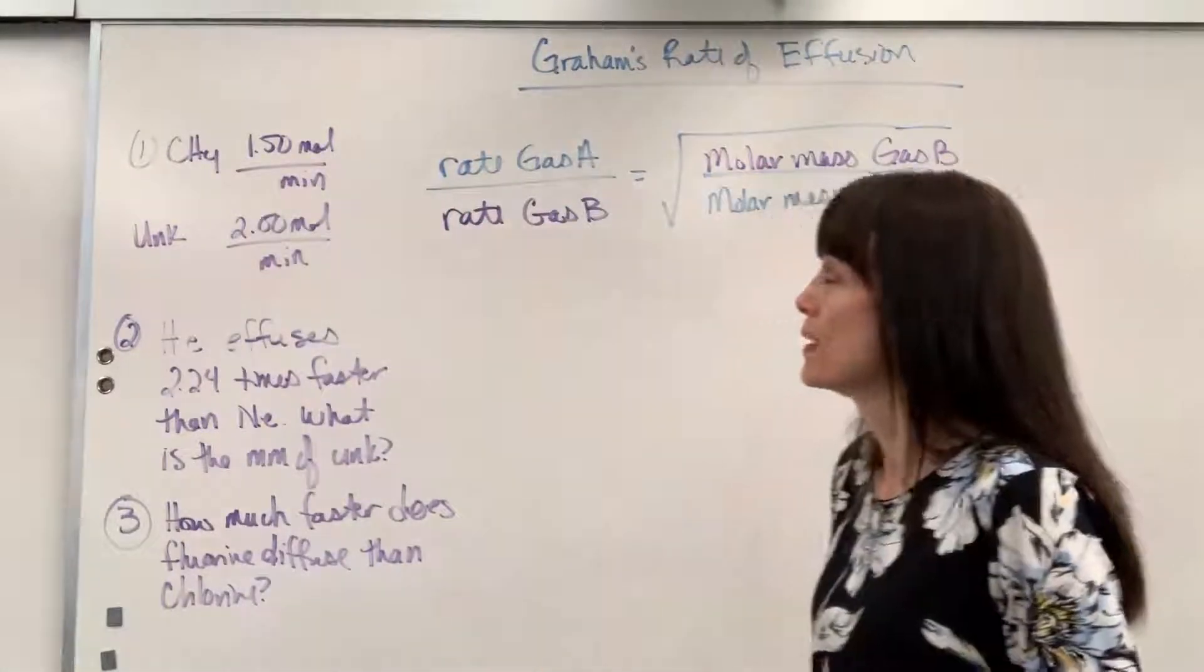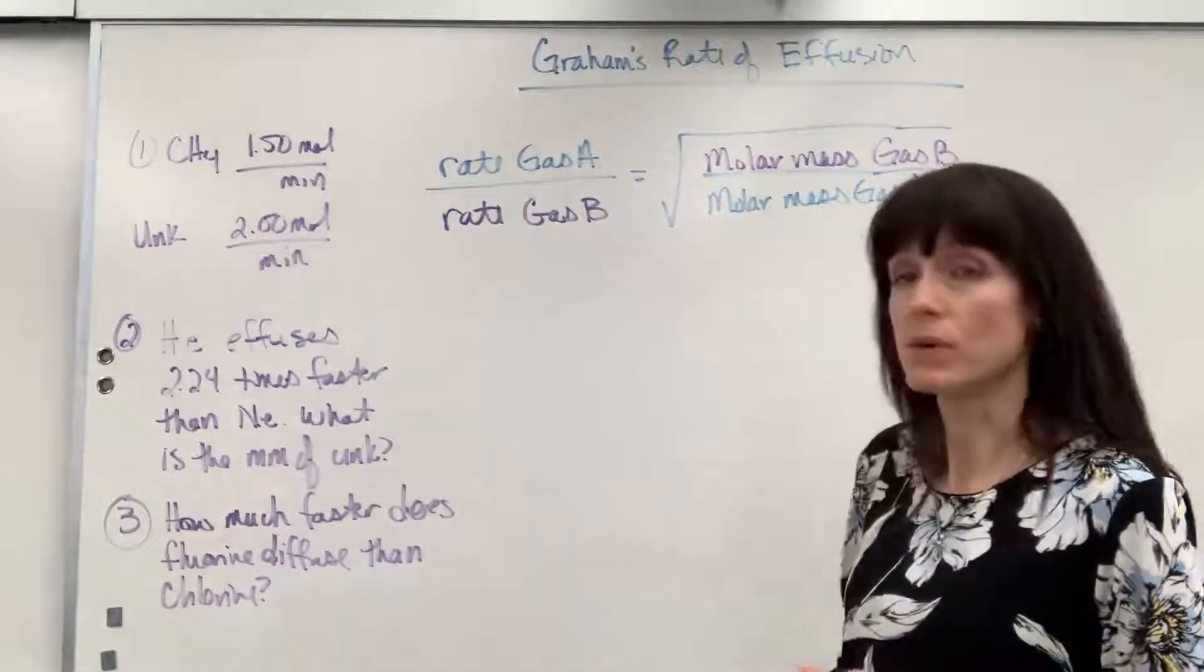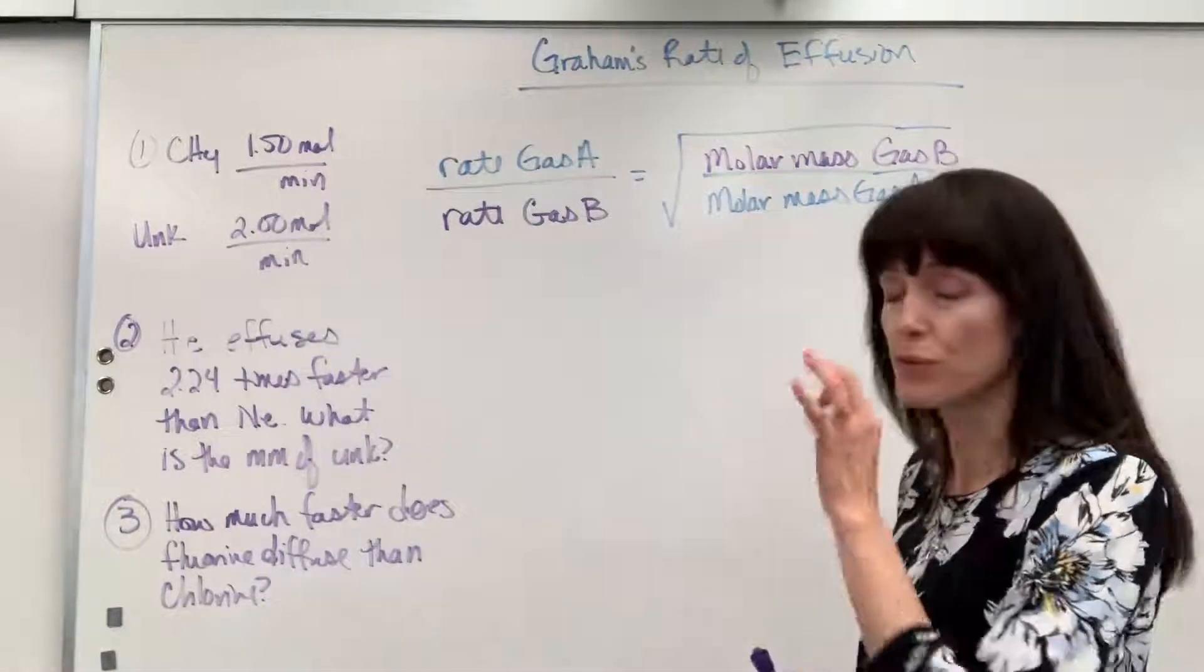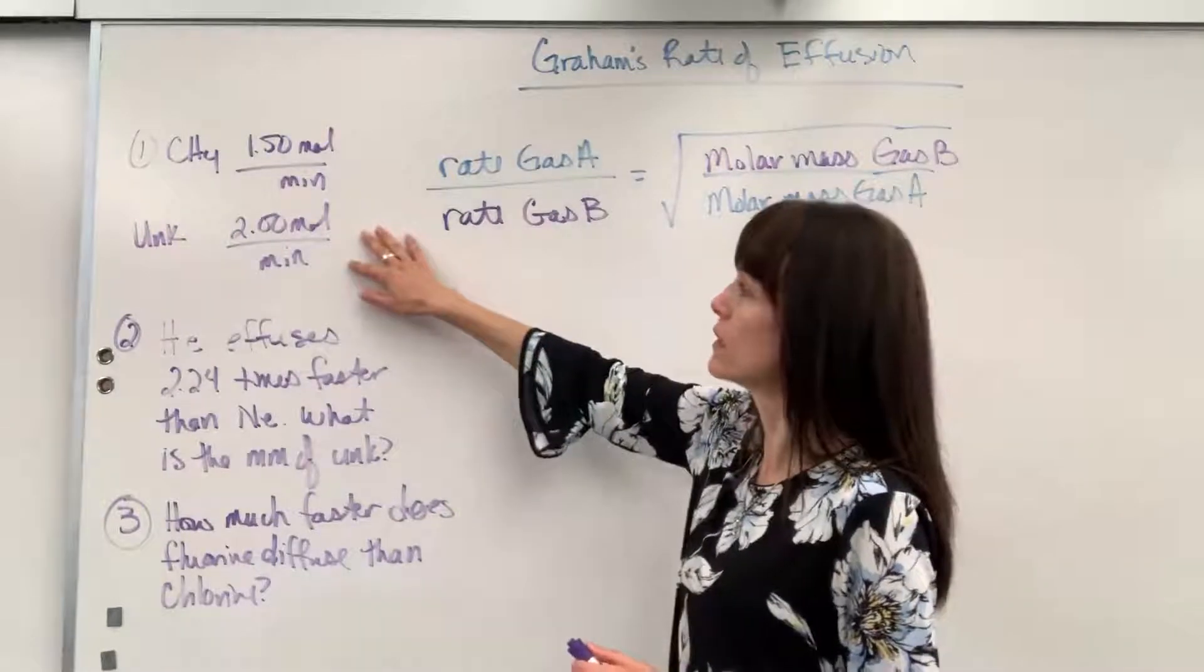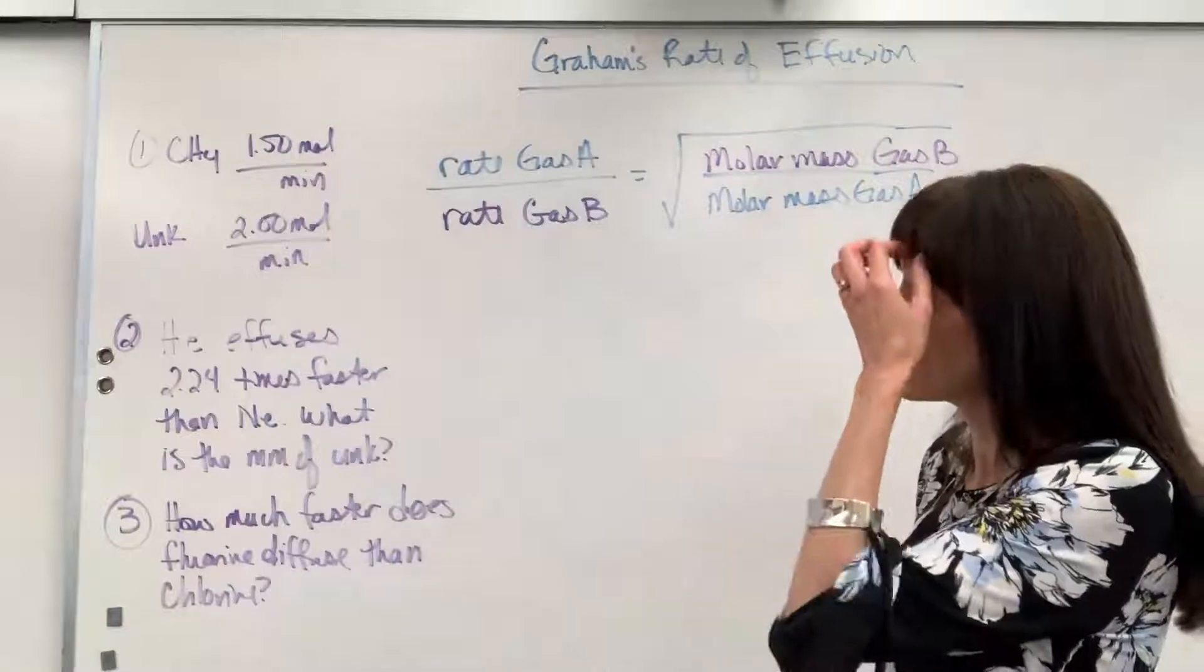So, let's take this first problem. Methane is going to effuse or diffuse at a rate of 1.5 moles per minute. That's how fast it moves through a hole if it's effusing. And the unknown effuses at 2 moles per minute.